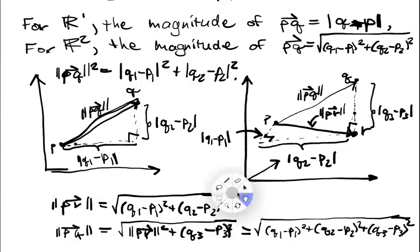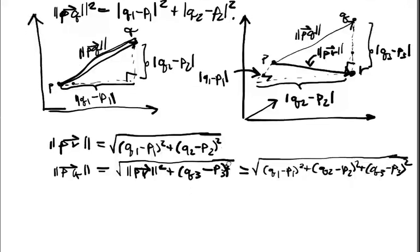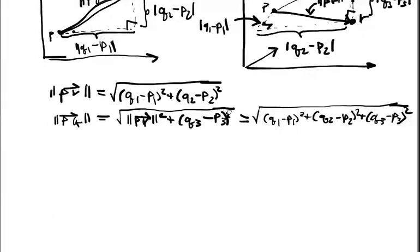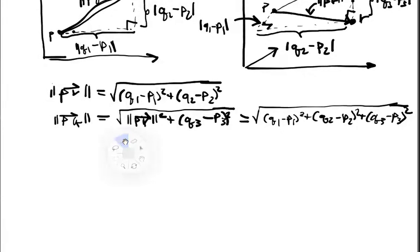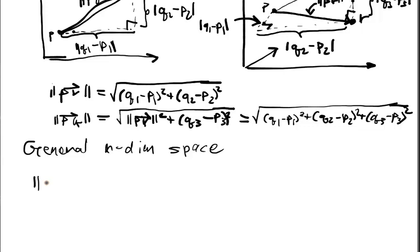And it turns out that if you iterate this argument, say using induction, that for the general n-dimensional space, we have that the magnitude PQ, also equal to the length of the line segment adjoining P to Q, is equal to a square root.